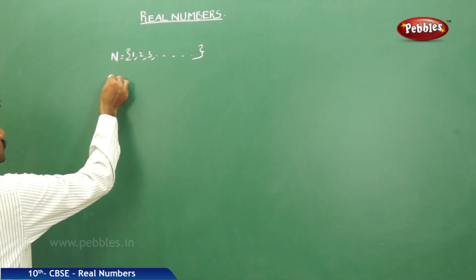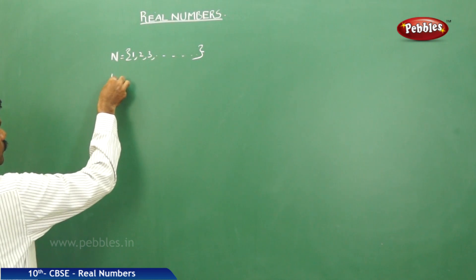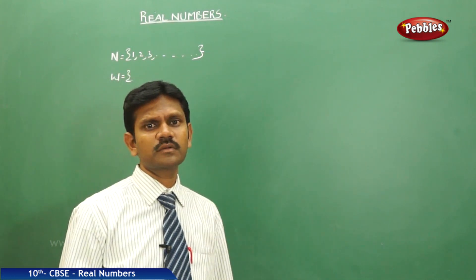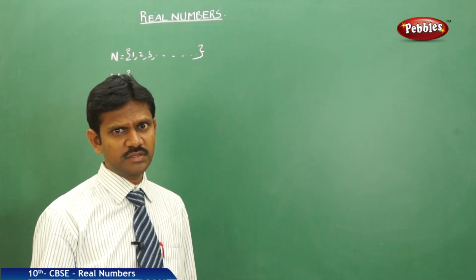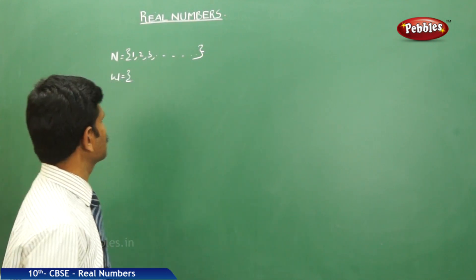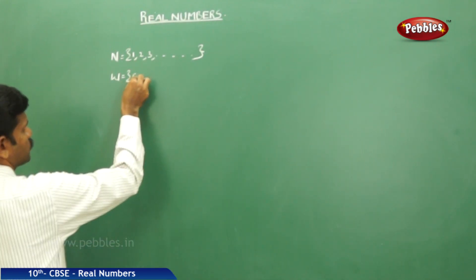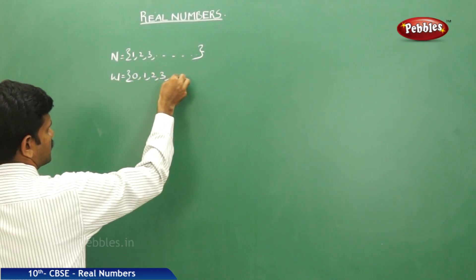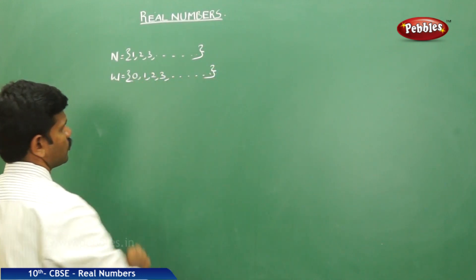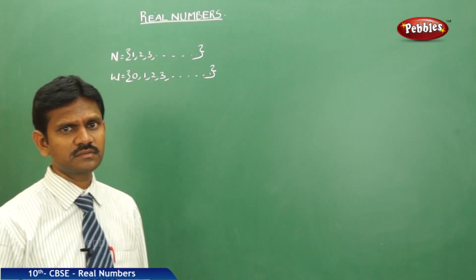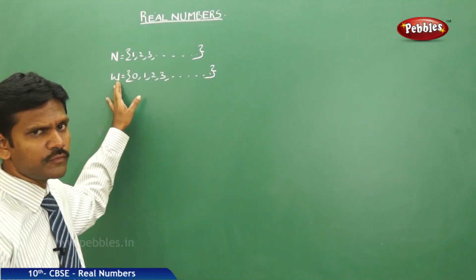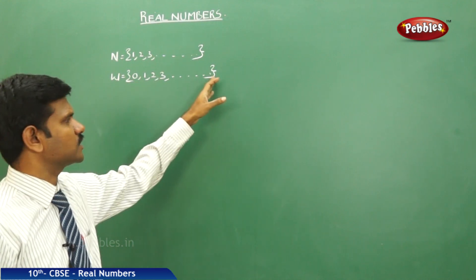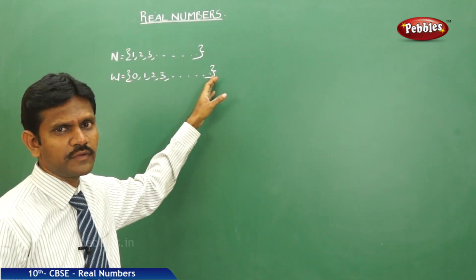Next, the set of whole numbers. Whole numbers are defined by taking the natural numbers and including 0. The set of numbers formed is called the set of whole numbers. In the set of whole numbers, the least number is 0 and the highest number is not defined.